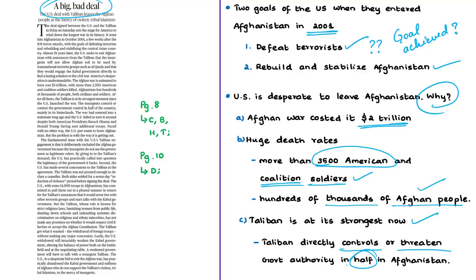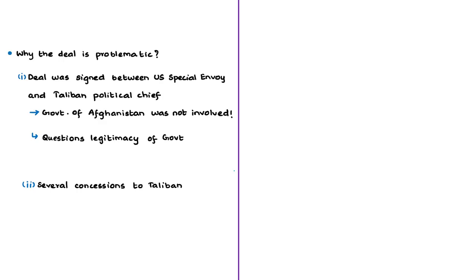Even though the US entered Afghanistan in 2001, successive presidents including Barack Obama and Donald Trump tried to eliminate the Taliban by sending additional troops, but this did not help. The US now just wants to leave Afghanistan since it has cost much and many soldiers have been lost. The author's opinion is that the peace deal signed by the US is out of desperation.